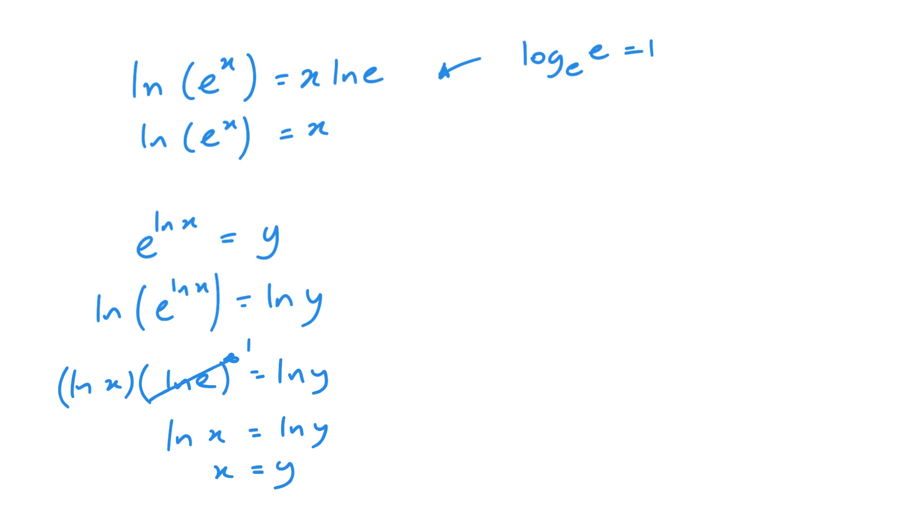Therefore, if I look back at the beginning, I can rewrite that as e to the power ln x equals x, as x is equal to y. So therefore, x is equal to both ln e to the x and e to the ln x.